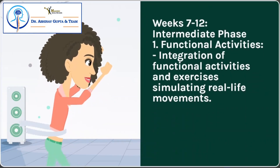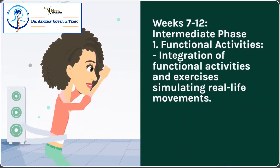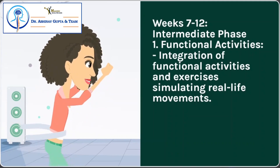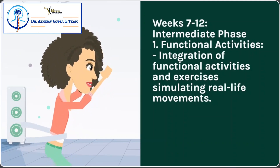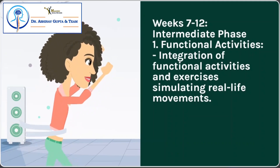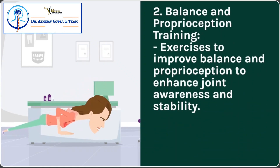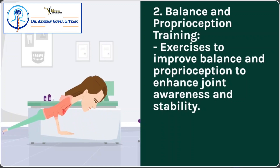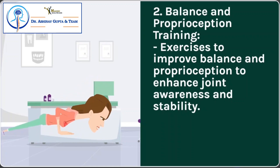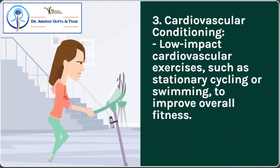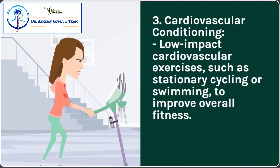Weeks 7 to 12 – Intermediate Phase: 1. Functional activities – integration of functional activities and exercises simulating real-life movements. 2. Balance and proprioception training – exercises to improve balance and proprioception to enhance joint awareness and stability. 3. Cardiovascular conditioning – low-impact cardiovascular exercises, such as stationary cycling or swimming, to improve overall fitness.